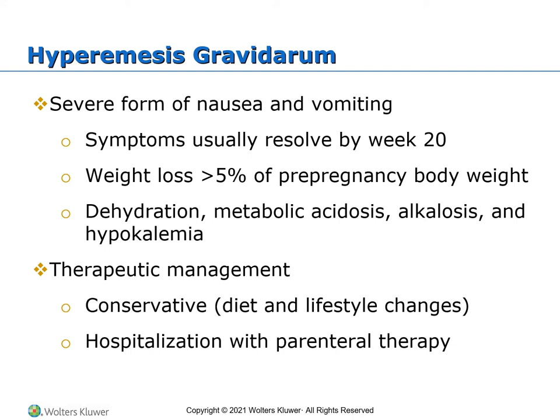Diclegis is the first-line therapy — this is pyridoxine and doxylamine. Doxylamine is actually a sleep aid, so it can't really be taken during the day. You may teach mom to get sleep aid and vitamin B6 and take them together as it is very expensive. Second-line treatments include dimenhydrinate (Dramamine), diphenhydramine (Benadryl), and promethazine (Phenergan). If these fail, ondansetron (Zofran) can be given. Other therapies include acupressure, hypnosis, massage, therapeutic touch, ginger, and wearing Sea-Bands.